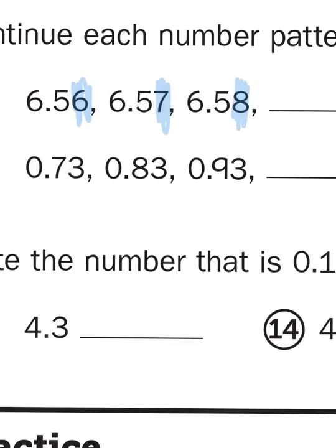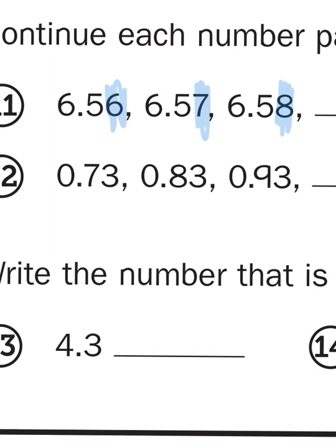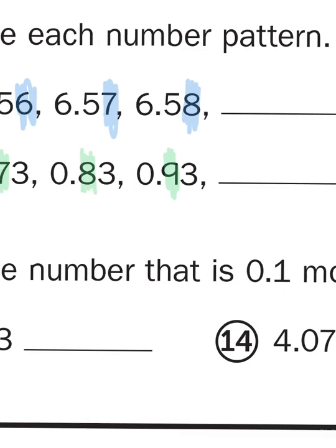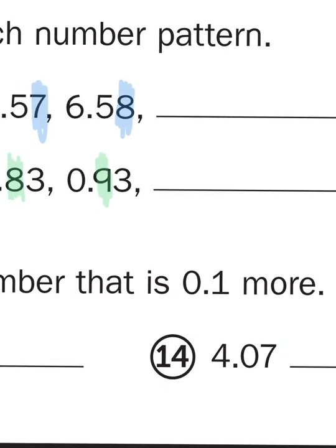Now, for number twelve, as you can see, we still have decimal numerals, but the only thing that's changing here is the tenths. Seven tenths, eight tenths, nine tenths, and so on. Another way of thinking about it is I'm skip counting by tens. Seventy-three hundredths, eighty-three hundredths, ninety-three hundredths. Well, what comes after ninety? Well, that would be one hundred. So if I had 0.93, my next number would be one hundred and three hundredths, like so.